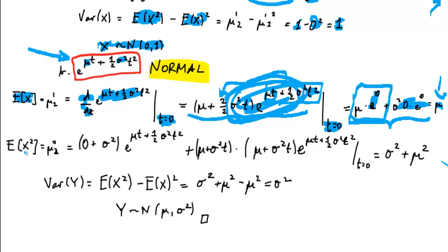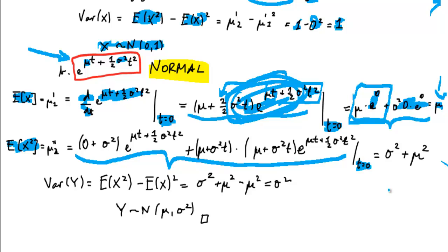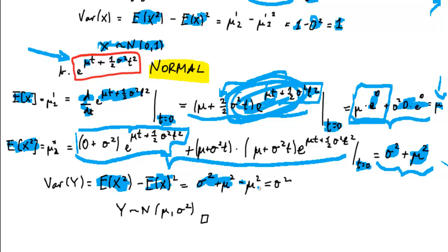For the second moment, apply the product rule and differentiate once more. The result is σ² + μ². The variance is the second moment minus the first moment squared: (σ² + μ²) − μ² = σ². This proves that Y is a normally distributed variable with mean μ and variance σ².